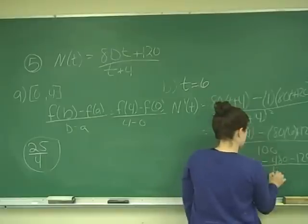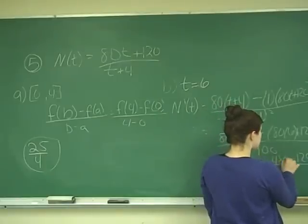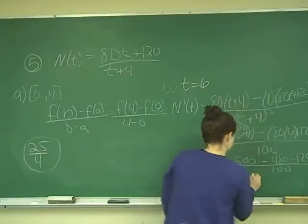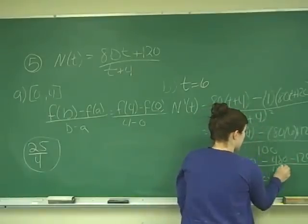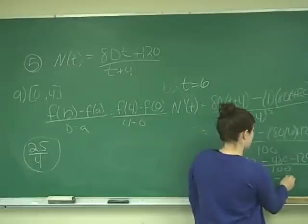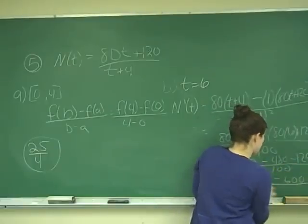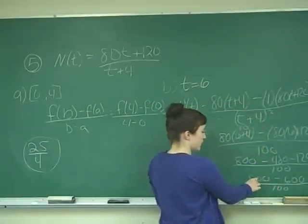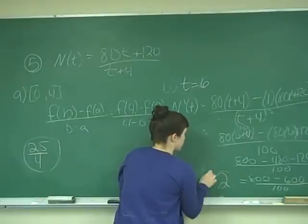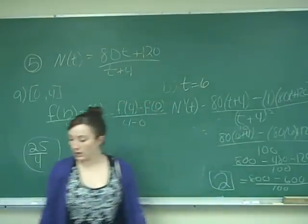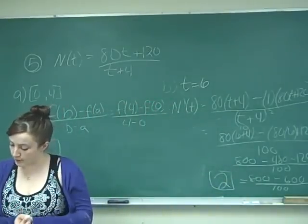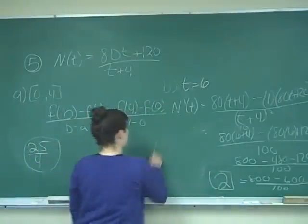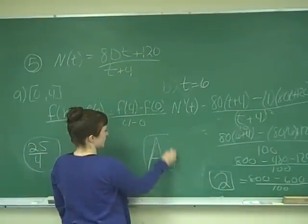So this gives me 800, minus, and then this is 600, all over 100. So this just gives me 200 over 100, which is equal to 2. And so our rate of change after 6 weeks will be 2 words per minute. So therefore, the answer for the whole problem is answer A.